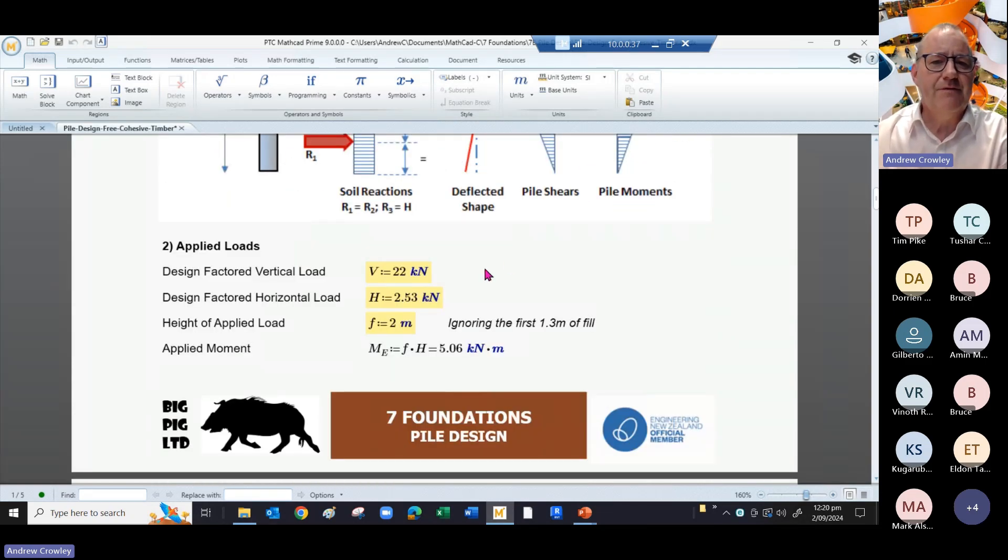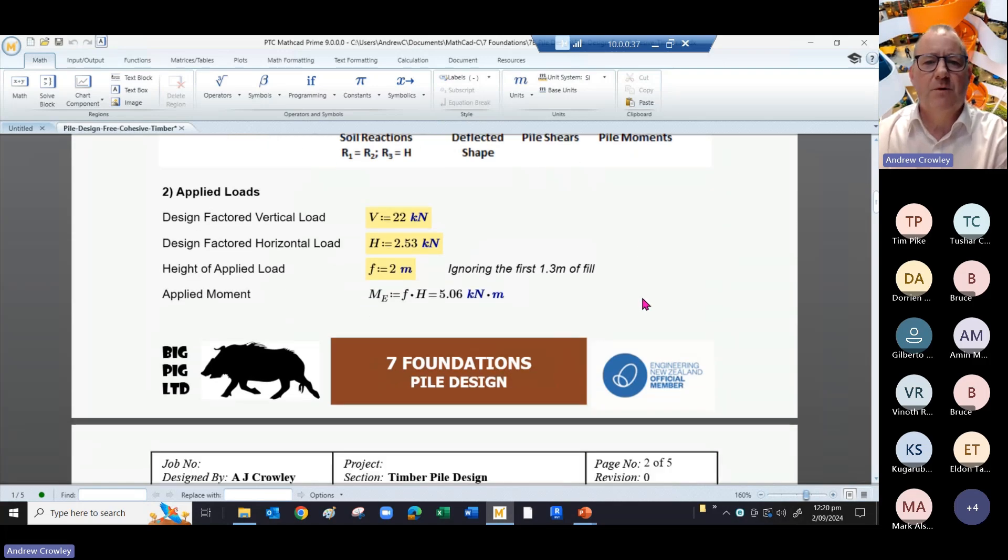Let's put in our loads. We've got some design factored vertical load and design factored horizontal load, and we're applying that at an effective height of two meters, which gives us an applied moment of five kilonewton meters.